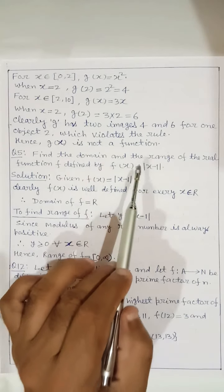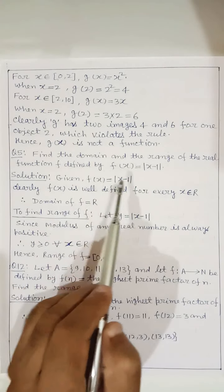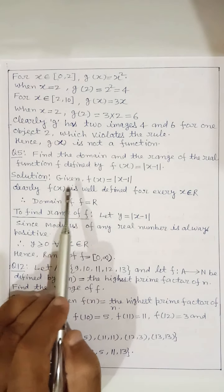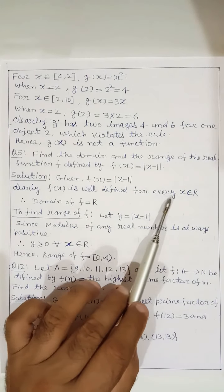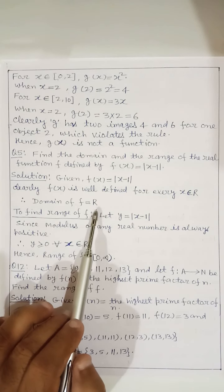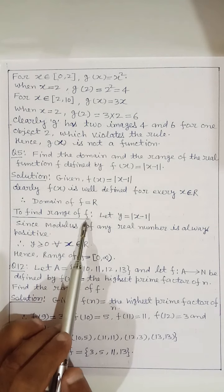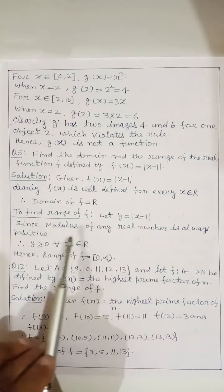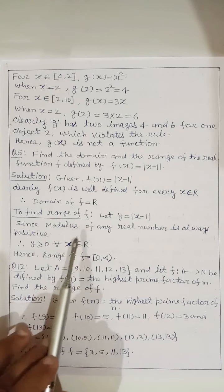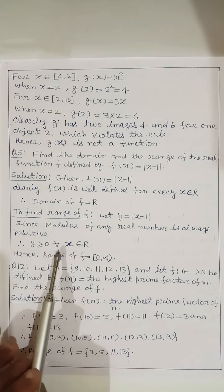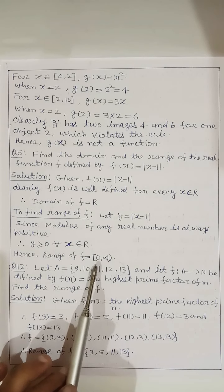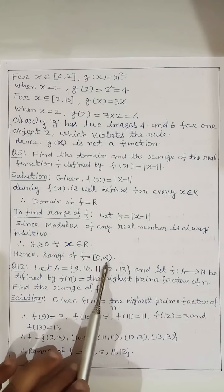Question number 5. Find the domain and range of the real function f defined by f(x) = |x − 1|. Given f(x) = |x − 1|, and f(x) is well-defined for every x ∈ ℝ. Therefore, the domain of the given function equals ℝ, the set of real numbers. To find the range, let y = |x − 1|. We know that the modulus of any real number is always non-negative, so y ≥ 0 for all x ∈ ℝ. Hence, the range of the given function is [0, ∞).